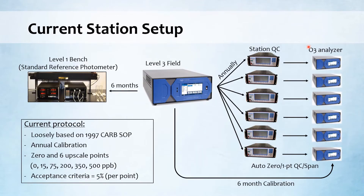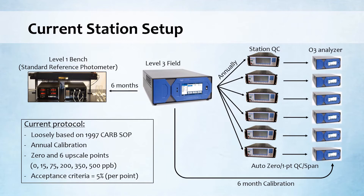In each of those six regulatory stations, we have an ozone analyzer and a station QC instrument. Our transfer standard — considered a level three under current terminology because it's used in the field — is sent on a six-month basis to the CARB Standards Lab to be verified against the level one Standard Reference Photometer. Then it's used on a six-month basis to calibrate the ozone analyzers and on an annual basis to calibrate the QC instrument, which generates the automated zero and one-point QC or span checks for the ozone analyzer. Our current protocol is loosely based on the 1997 CARB SOP for the Environyx 9100, so we're probably a little overdue for an update.